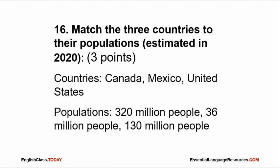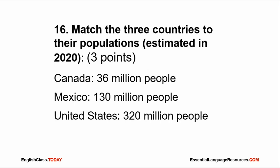Number 16. Match the three countries to their populations, estimated in 2020, for three points. The populations: 320 million people, 36 million people, and 130 million people. The correct answers: Canada, 36 million people; Mexico, 130 million people; and the United States, 320 million people.